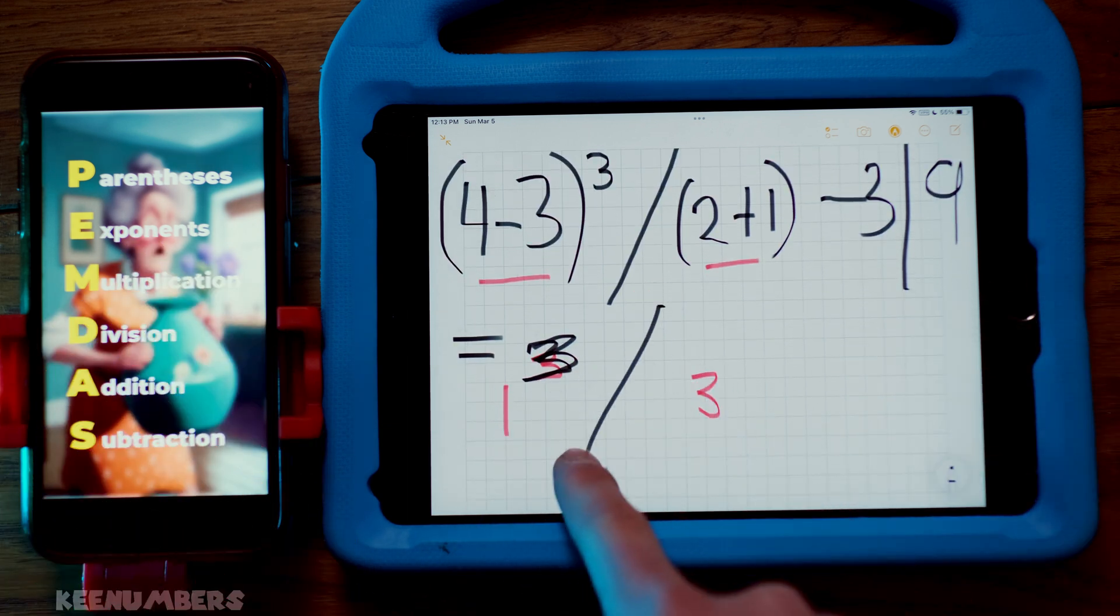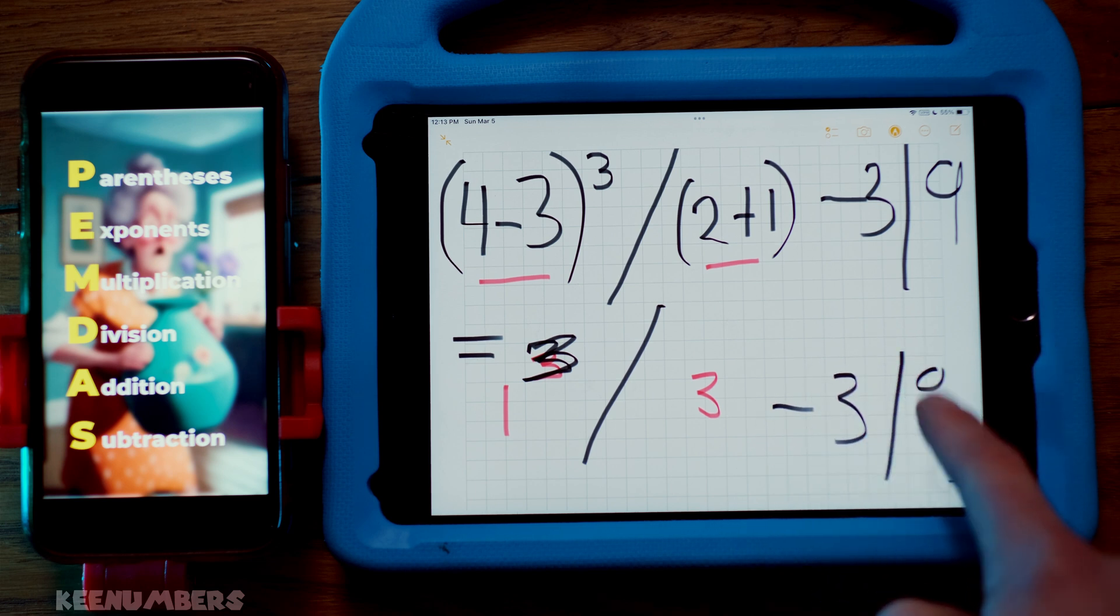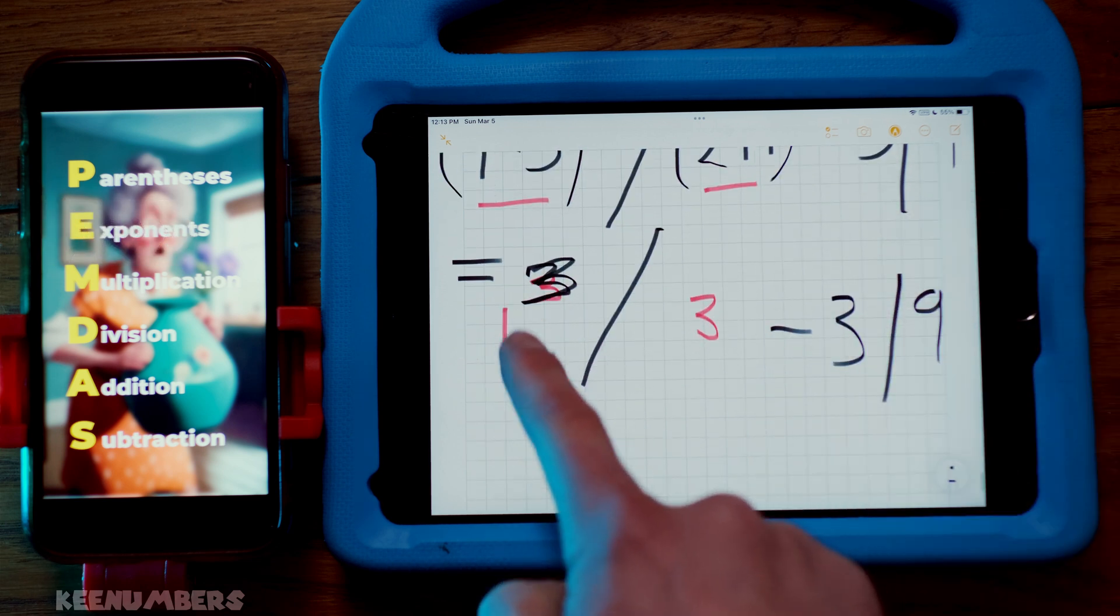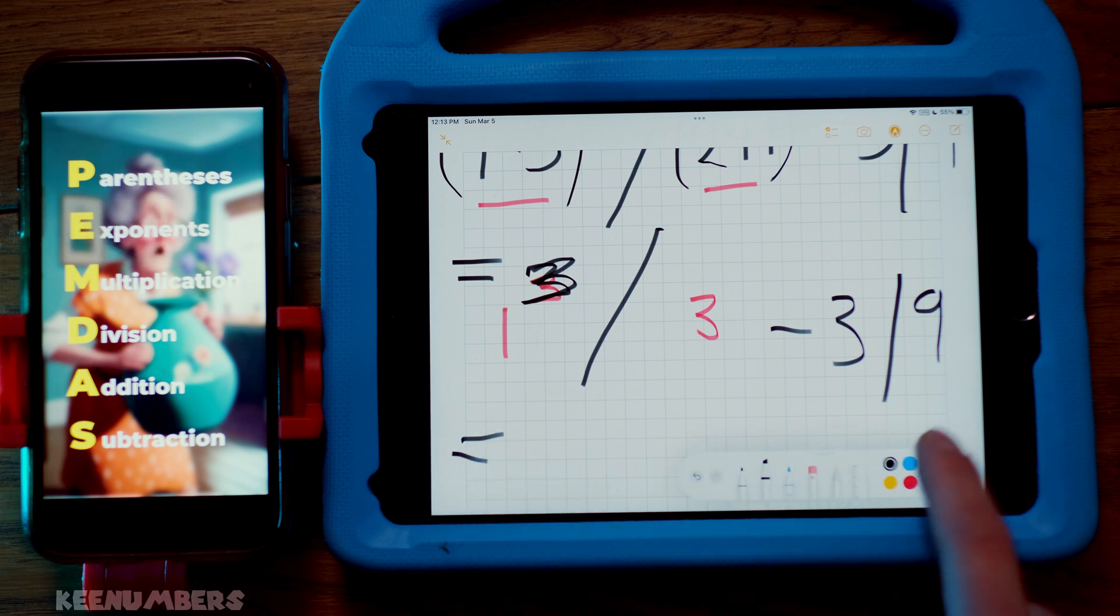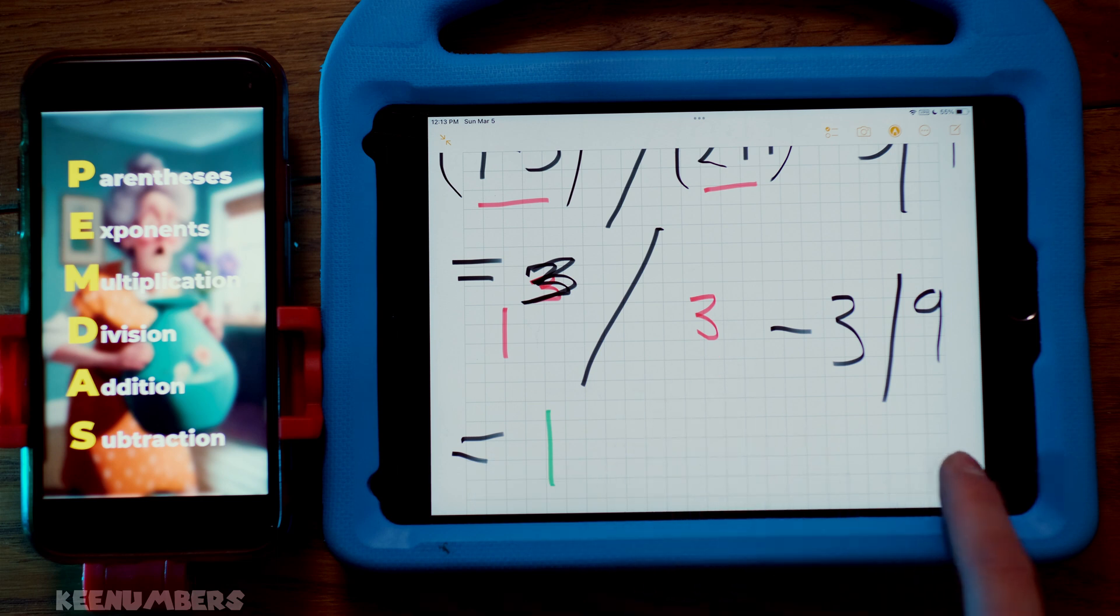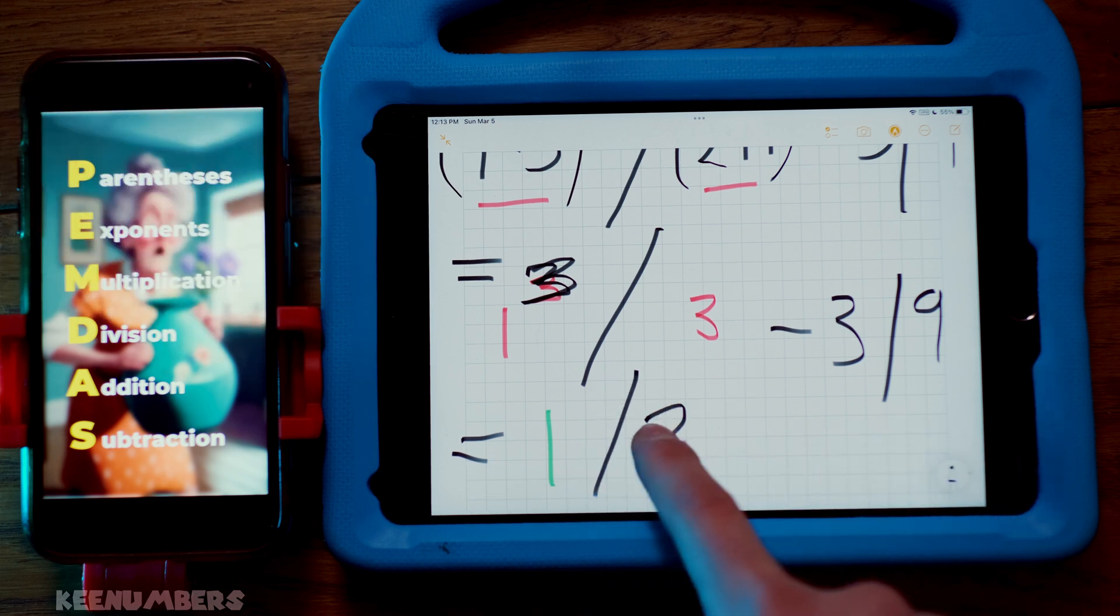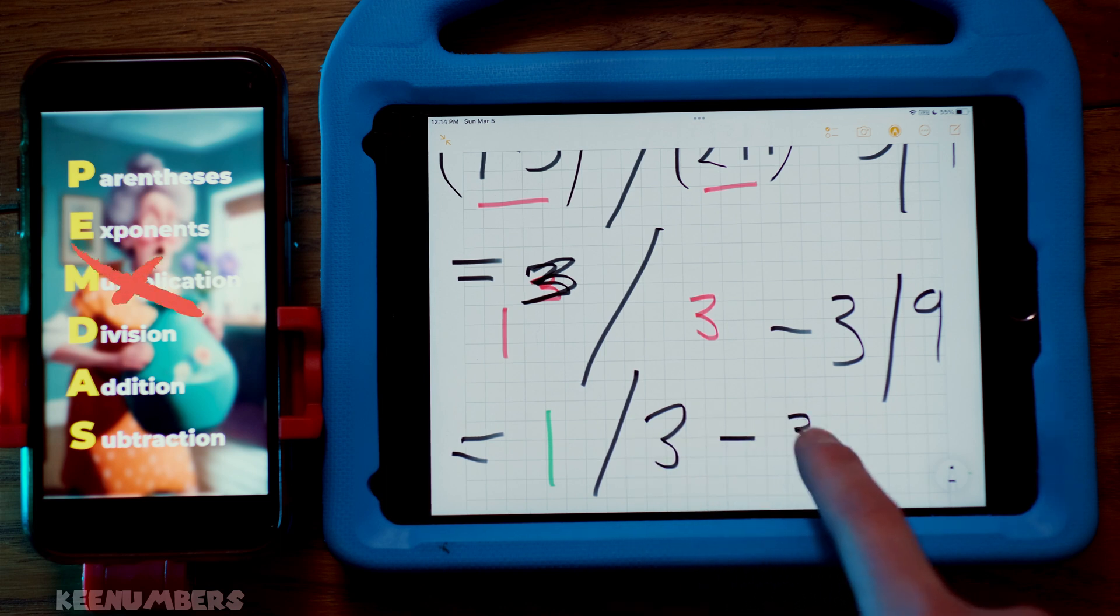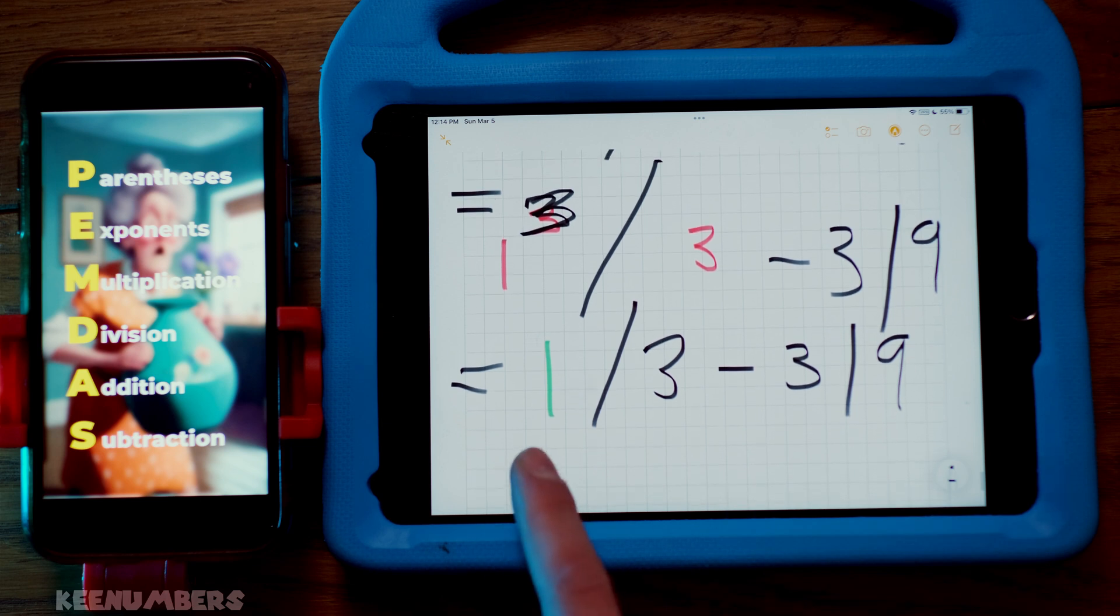1 cubed divided by 3 minus 3 divided by 9. Well, the good news is 1 times 1 times 1, or 1 cubed, is still just 1. Did you catch that? Even with my sloppy handwriting? 1 times 1 times 1, because that's what 1 cubed is, you still just have 1. And then you're going to carry on with multiplication, then division, and then addition, followed by subtraction. Well, check it out.